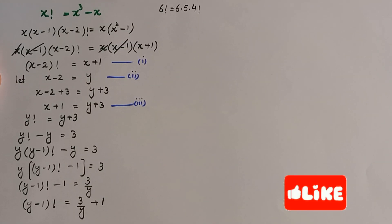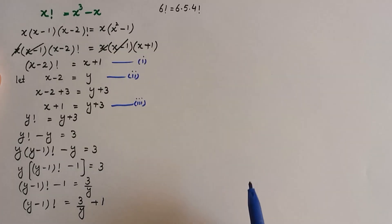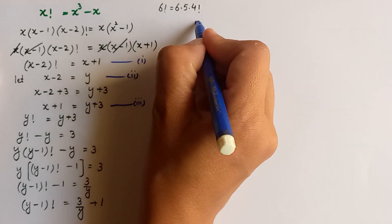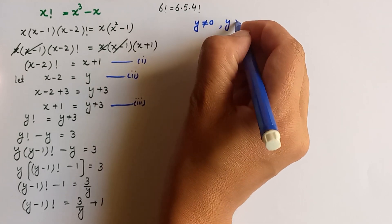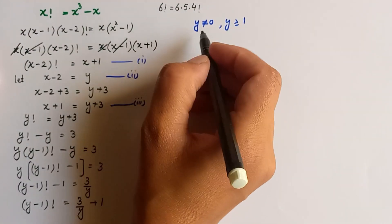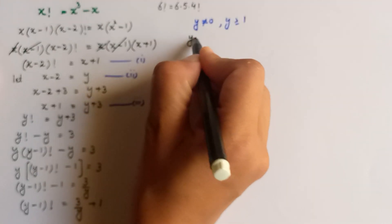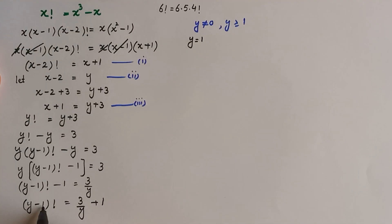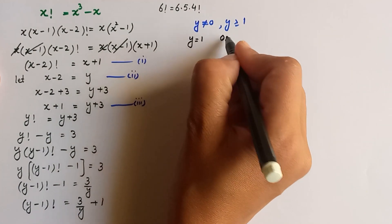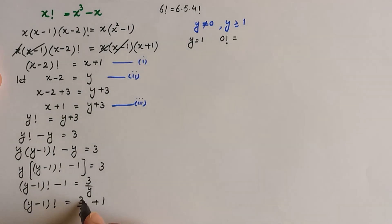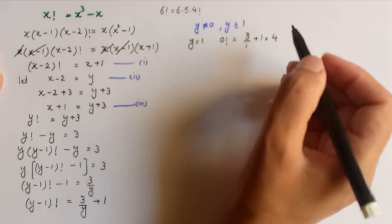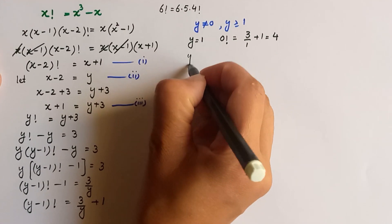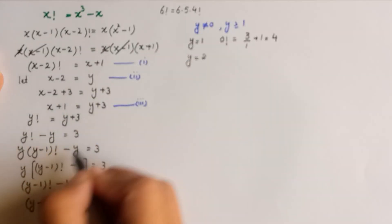Since a negative factorial is not possible, y cannot be 0; it must be greater than or equal to 1. Taking y equals 1: (1 minus 1) factorial, i.e., 0 factorial, equals 3 over (1 plus 1), which means 0 factorial equals 4 over 2 — not true.